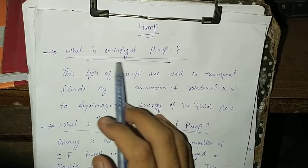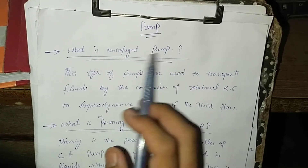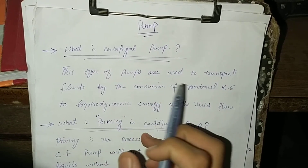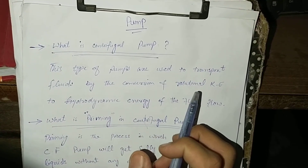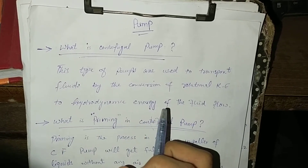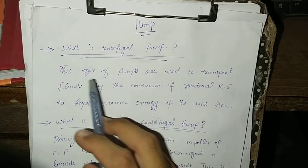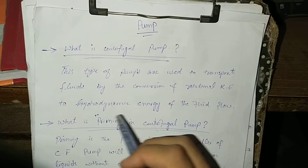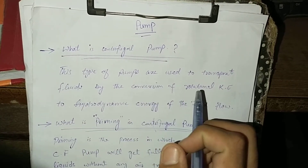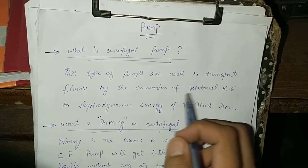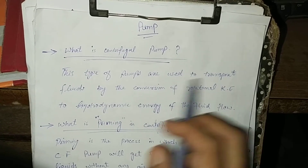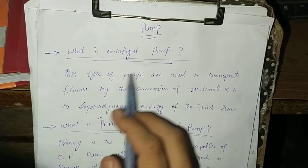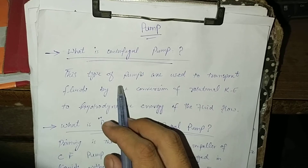When we discuss the centrifugal pump, we define it as a type of pump used to transport fluid by the conversion of rotational kinetic energy to the hydrodynamic energy of the fluid flow. The rotational kinetic energy refers to the kinetic energy of the impeller.